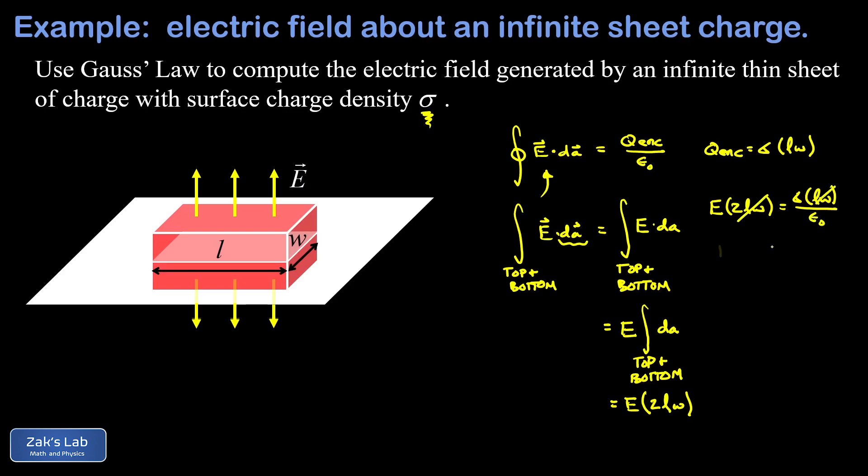So now we can cancel the L and W and we end up with an electric field of sigma over two epsilon zero. And that's it.